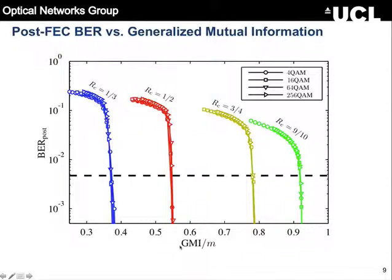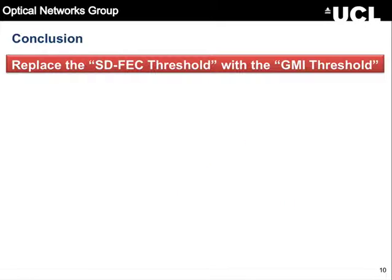What are the conclusions? Two conclusions. One: don't use the SDFEC threshold — do not draw these horizontal lines simply because it doesn't work. Two: use a GMI threshold, which works.